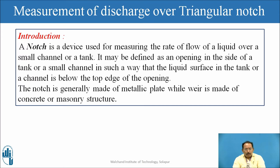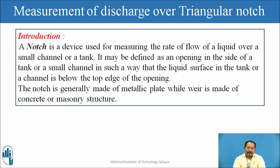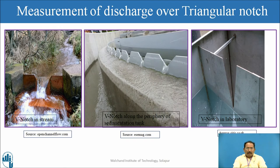The uses are same, but notches are thin plates while the weirs are rigid structures — concrete or masonry structures. Here I have collected some figures of the notches to get a brief idea about the notch.